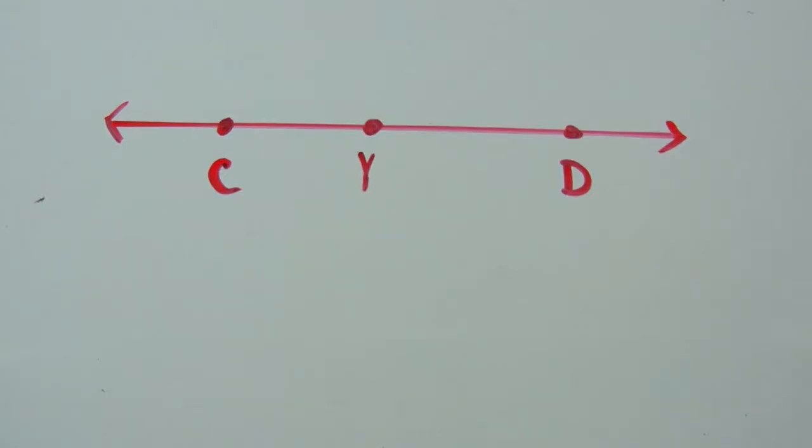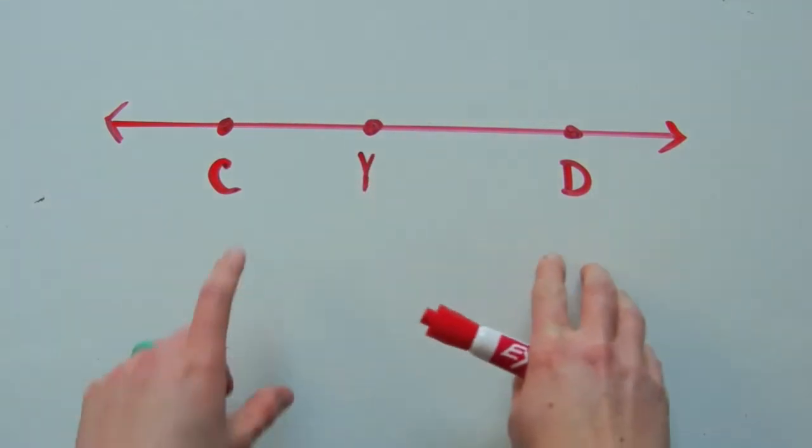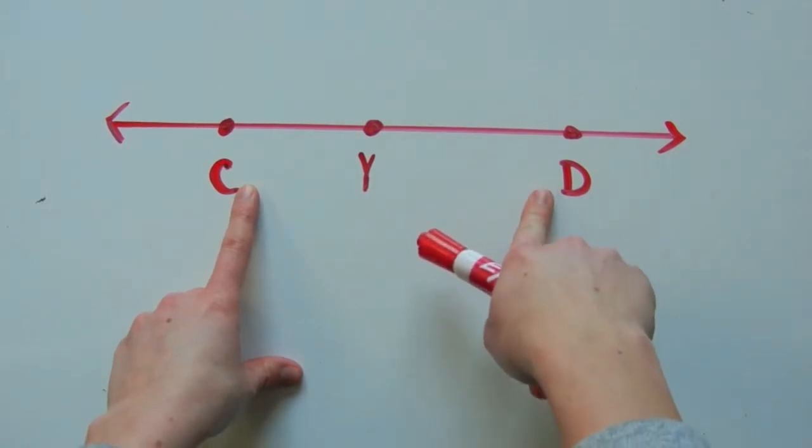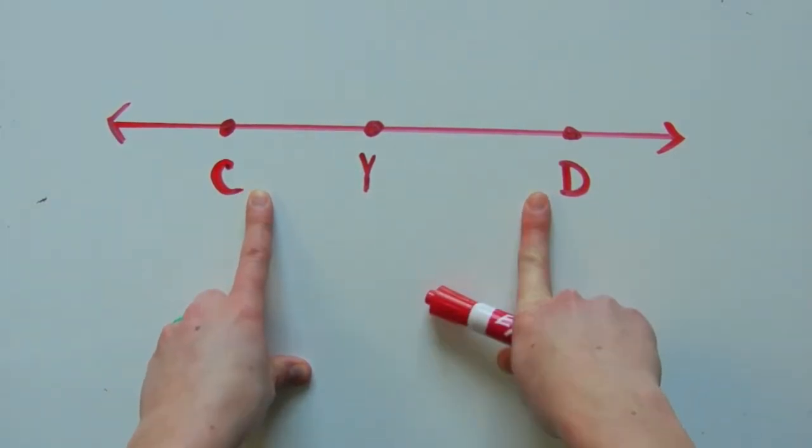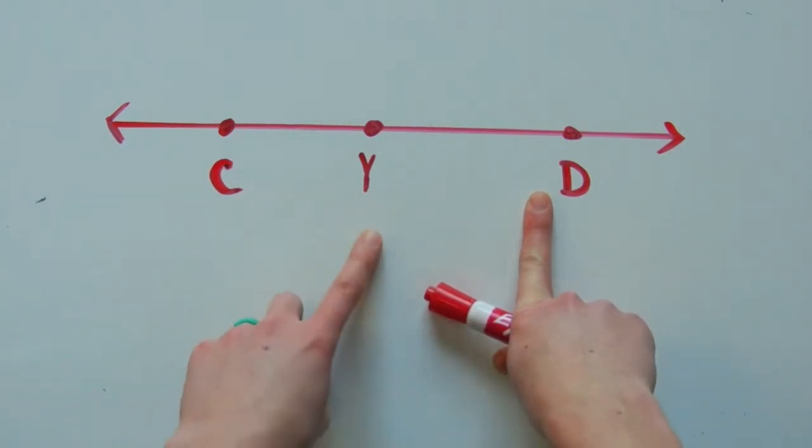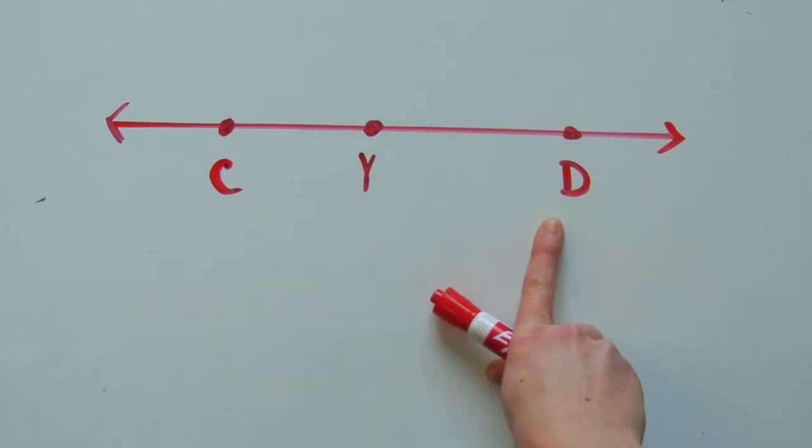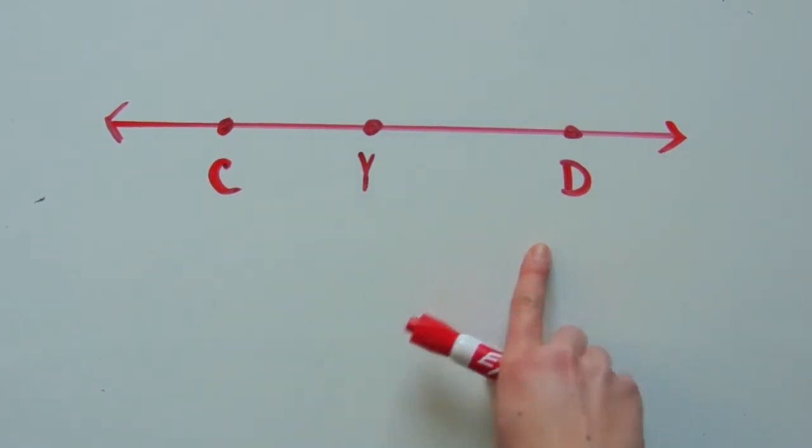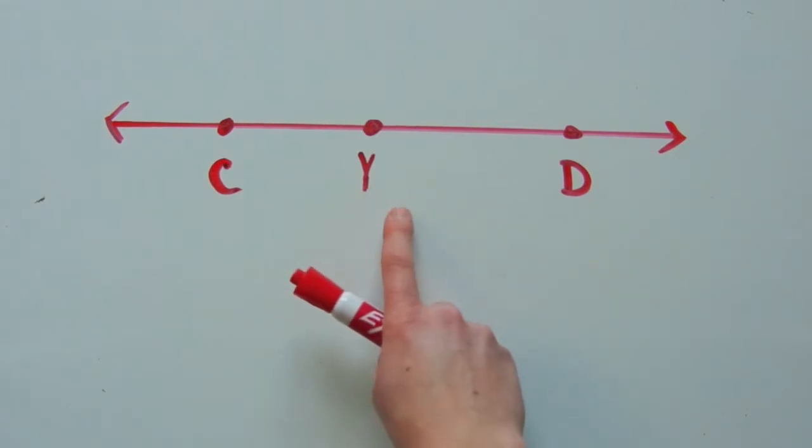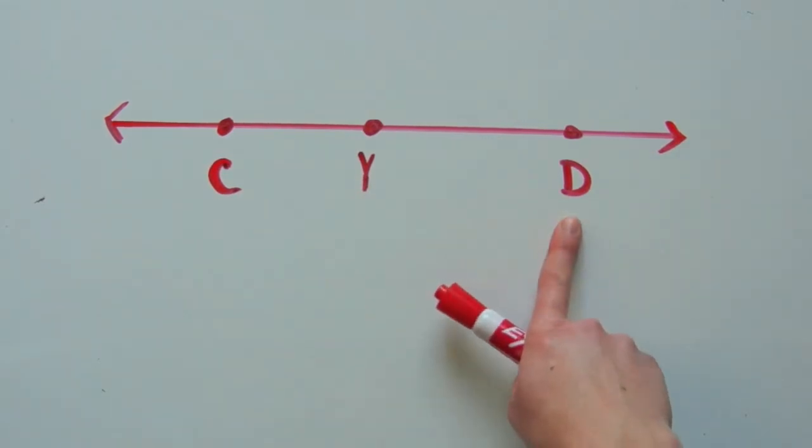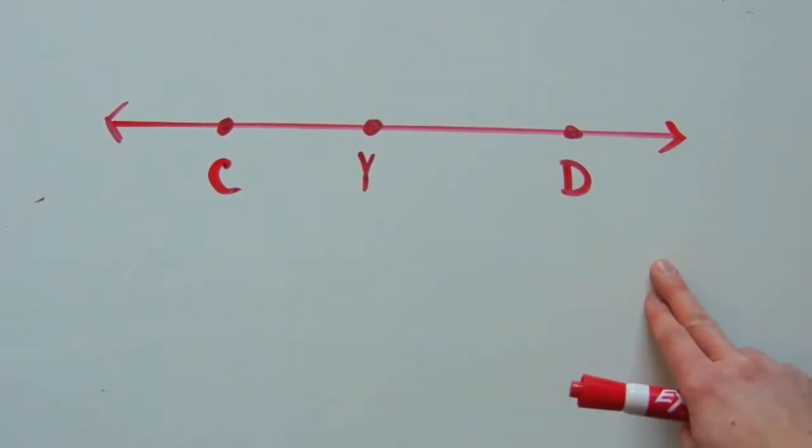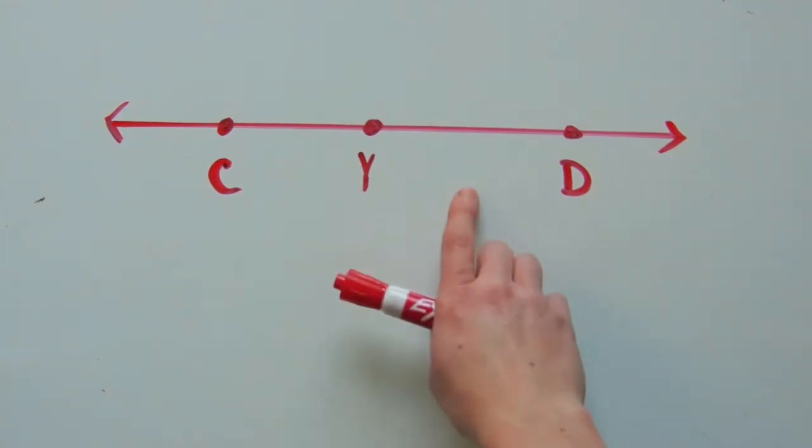Looking at this picture we can say that point Y is between points C and D. Writing this as a math definition, we can say that point Y is between C and D if and only if C, Y, D are collinear and fall on the same line, which in this case they do,